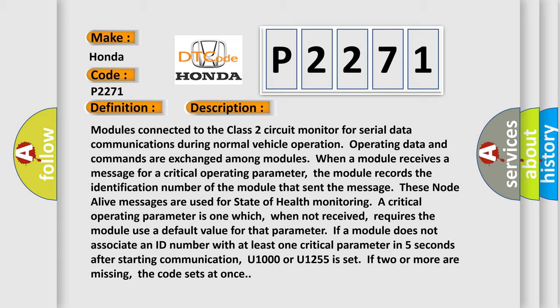These node alive messages are used for state of health monitoring. A critical operating parameter is one which, when not received, requires the module to use a default value. If a module does not associate an ID number with at least one critical parameter in five seconds after starting communication, U1000 or U1255 is set. If two or more are missing, the code sets at once.